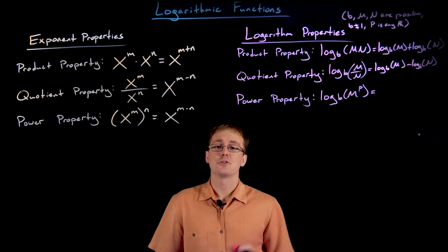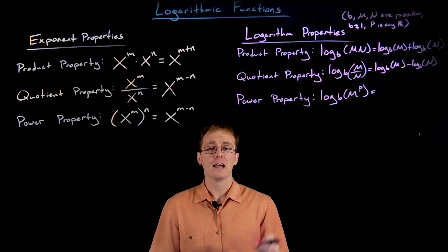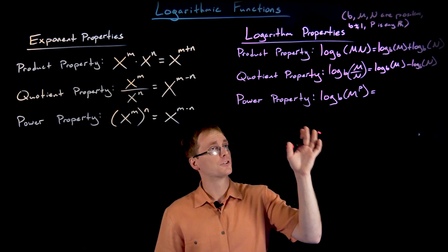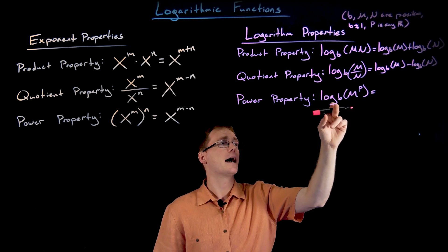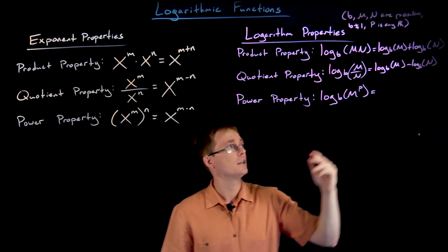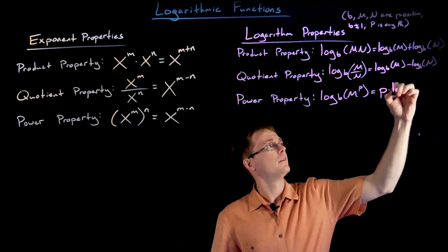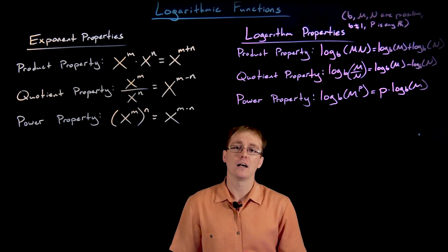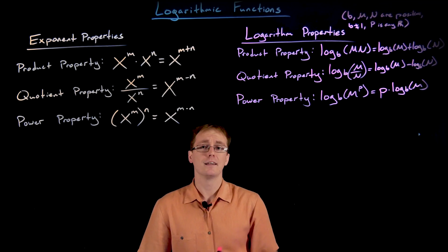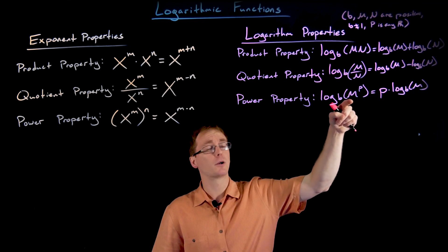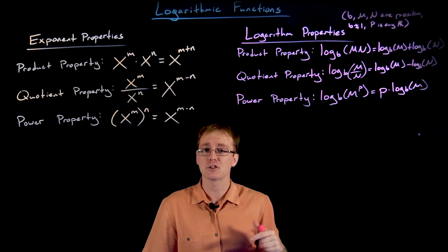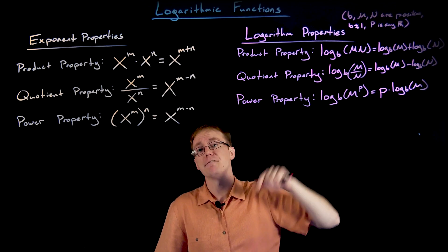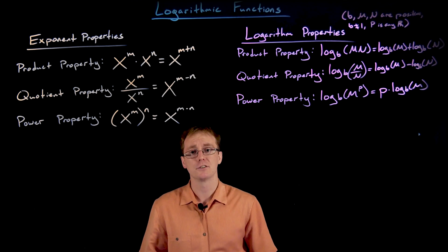The last property we're adding to our list is the power property for logarithms, which is probably the most important of the three when it comes to solving exponential equations. The power property says that if we have log base b of M raised to some power p, we can bring that power p out front as a factor: p times log base b of M. This is so useful because when solving exponential equations, a variable is in the exponent and we don't know how to get it out — this property lets us bring that variable down and make solving exponential equations actually doable.